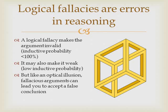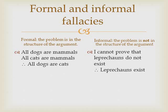Logical fallacies are errors in reasoning. A logical fallacy makes an argument invalid, which means that the inductive probability is less than 100%. The logical fallacy may also make the argument weak, meaning a low inductive probability. But like an optical illusion, fallacious arguments can lead you to accept a false conclusion. Logical fallacies can be divided into two basic categories: formal and informal. The formal logical fallacies are problems related to the structure of the argument. The one on the left — all dogs are mammals, all cats are mammals, therefore all dogs are cats — is an example of the fallacy of the undistributed middle term. To the right is an example of an informal logical fallacy called the argument from ignorance: I cannot prove that leprechauns do not exist, therefore leprechauns exist.